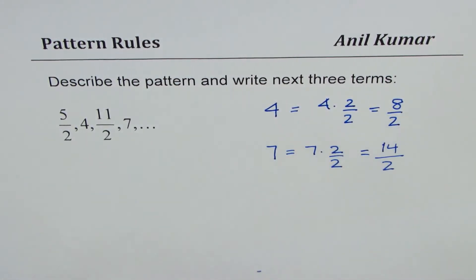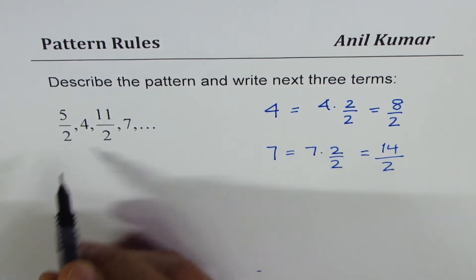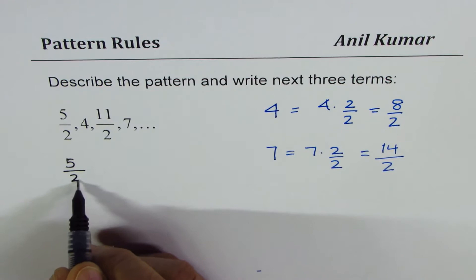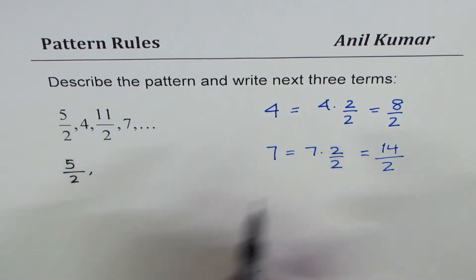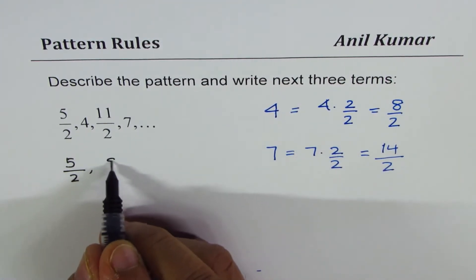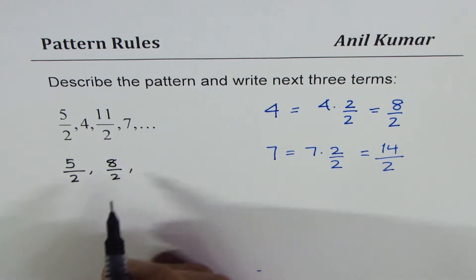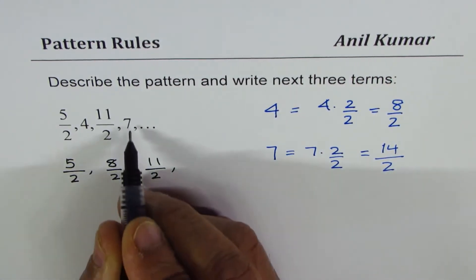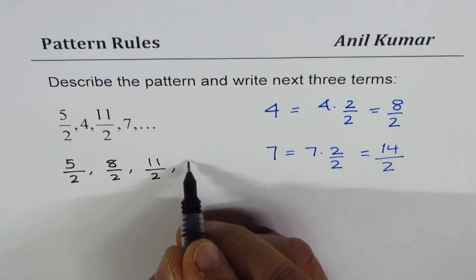So let's do this and then see the pattern. So what you really get here is 5 over 2, next term 4, I'll write as 8 over 2. We have 11 over 2. And 7, I'll write as 14 over 2.